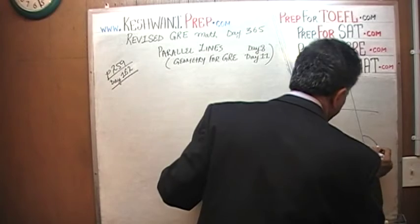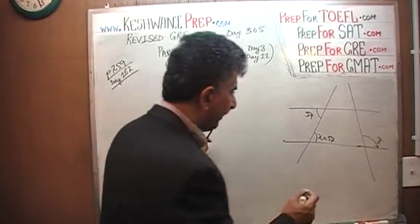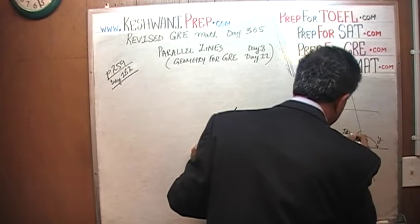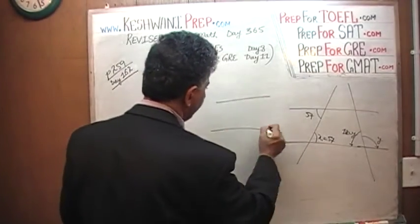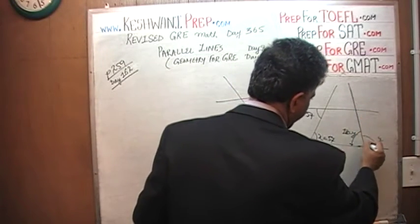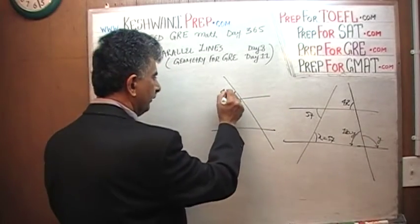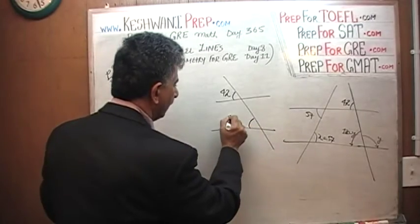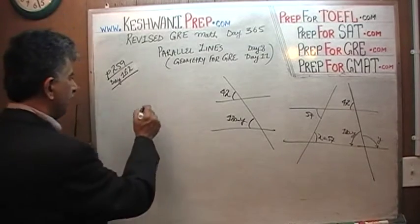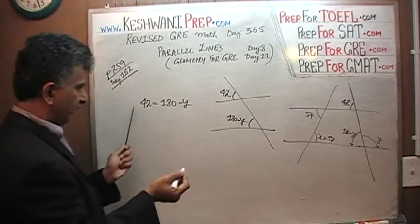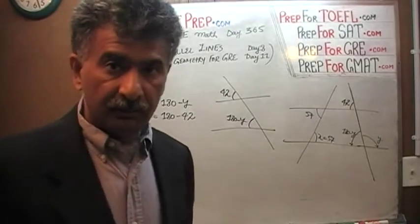We are told that this angle is Y. Since a straight line makes 180 degrees, the remainder must be 180 minus Y. Now, we have two parallel lines here, intersected by a third line. We are told this angle is 42. We just found the other angle is 180 minus Y. Since these two angles are equal by the parallel lines property, we get: 42 equals 180 minus Y.